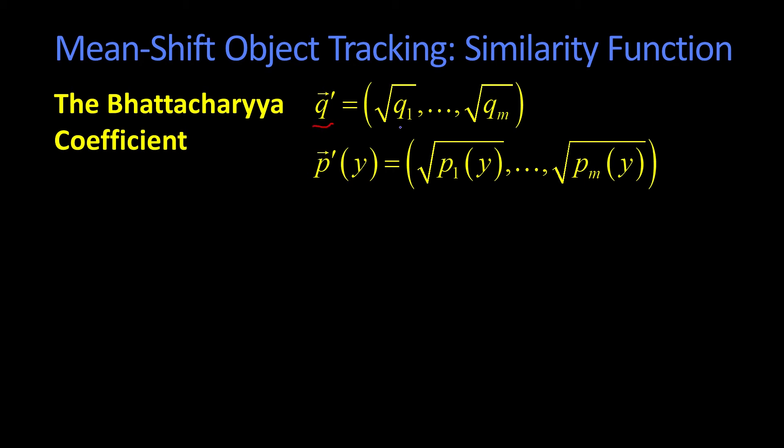What you do is you take your distributions here and you change it by taking the square root of each of the components. So if q is a distribution q1 through qm, then q prime is going to be square root of q1 through the square root of qm. Same thing with the new proposed distribution p around y. We're going to take p prime where we take the square roots.